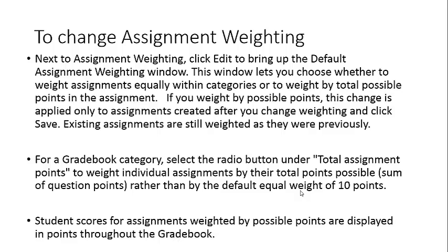For each gradebook category, select the button under Total Assignment Points to weight individual assignments by their total points possible, rather than the default equal weight of ten points. Student scores for assignments weighted by possible points are displayed in points throughout the gradebook.